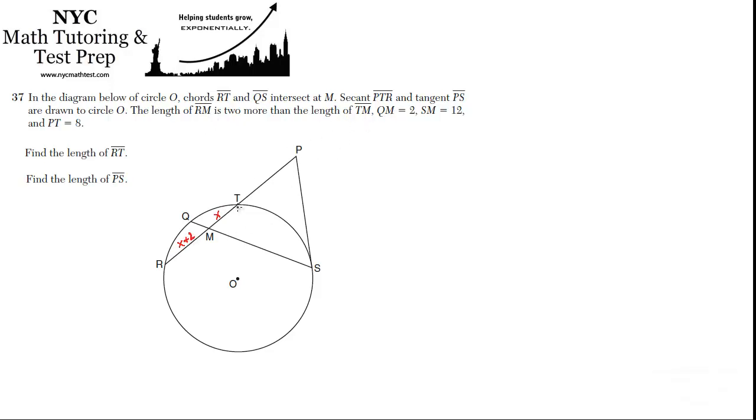And QM is 2, and SM is 12, and PT is 8. So we get a lot of given information here. We've labeled it. And they want us to find two things. Find the length of RT, and then find the length of PS.